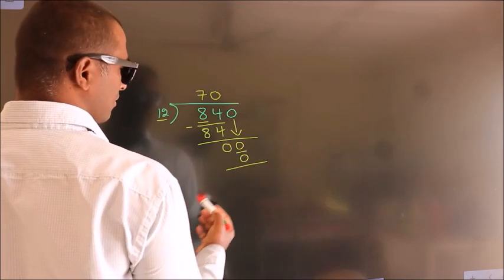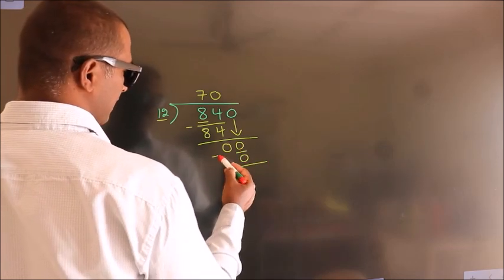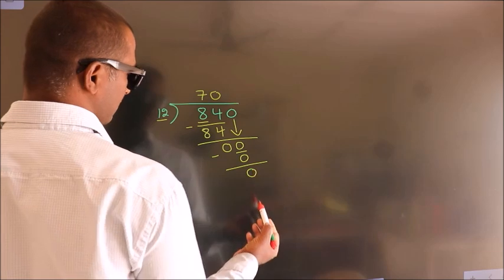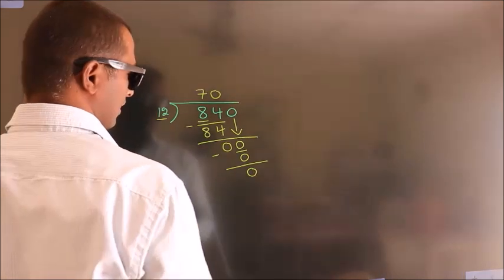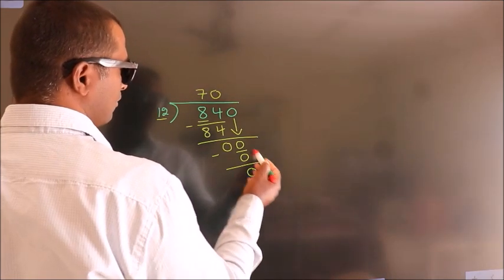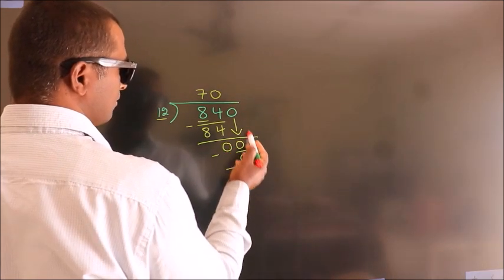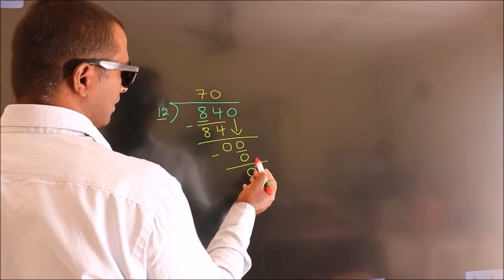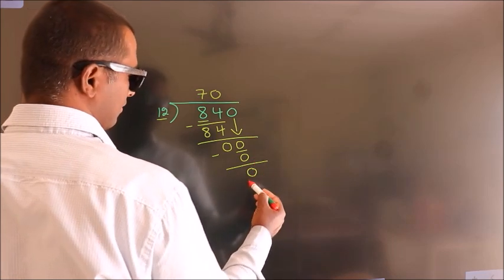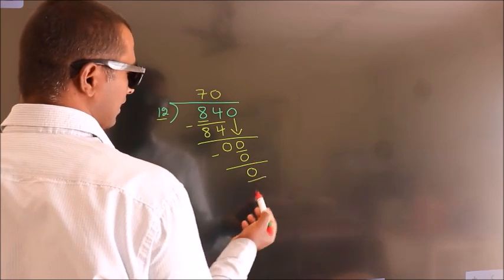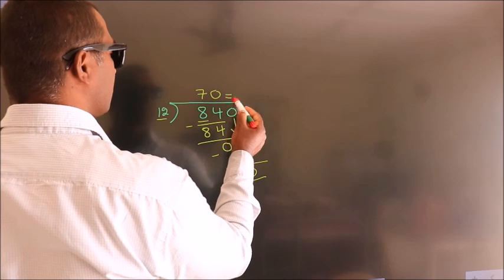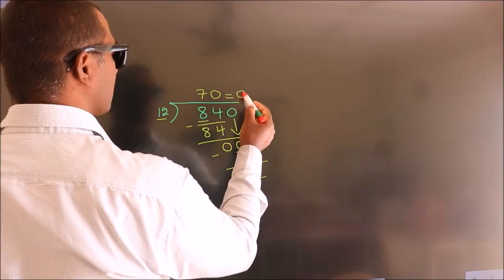Now we subtract and we get 0. After this, there are no more numbers to bring down. We got remainder 0, so this is our quotient.